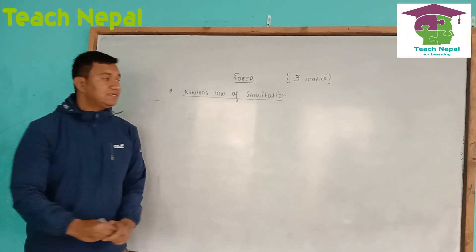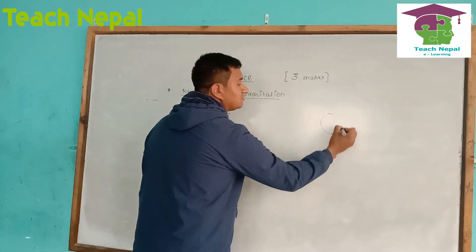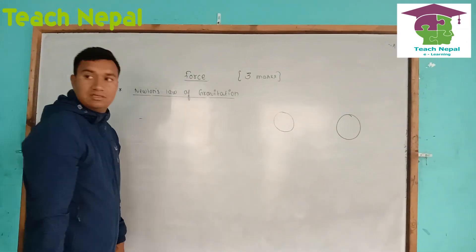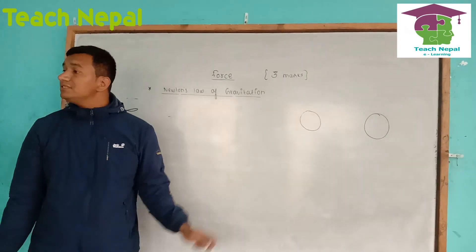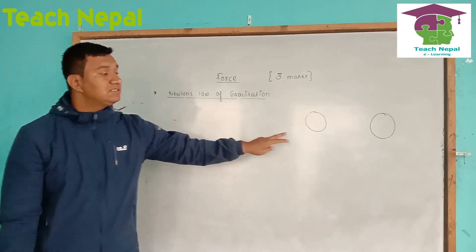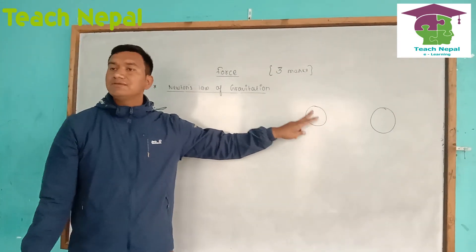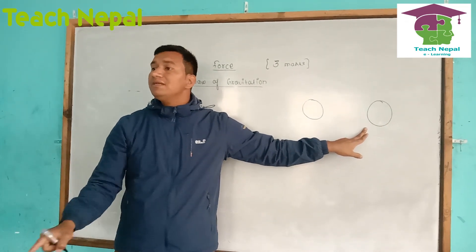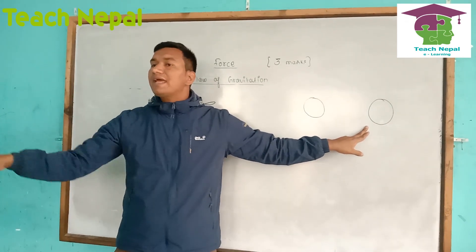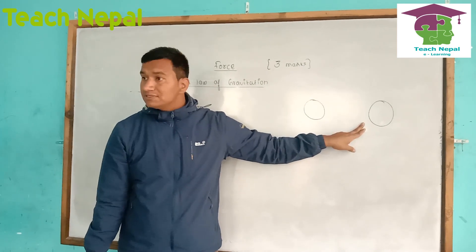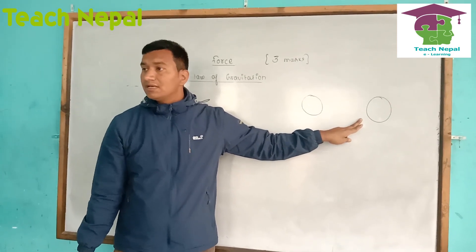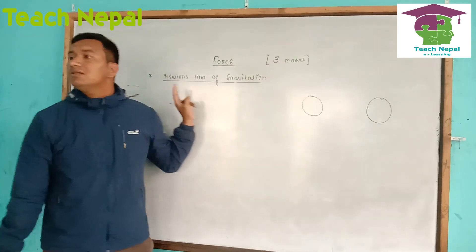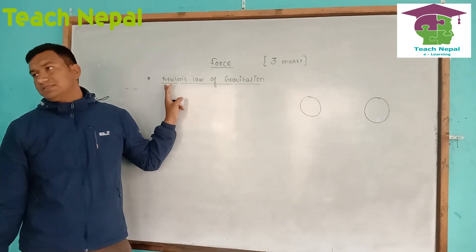We have said that there is a force of attraction between two objects. What is the force of attraction between two objects? The expression or statement that derives the relationship between the forces and its component factors is called Newton's Law of Gravitation.